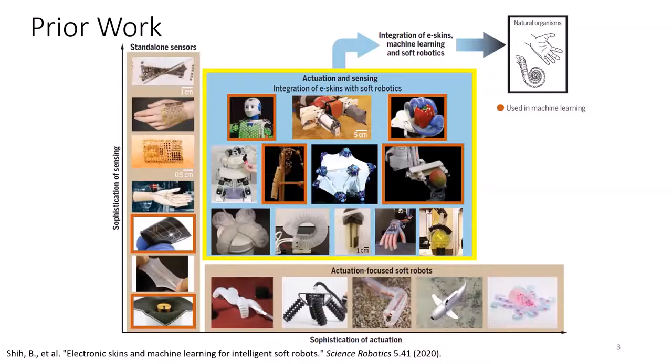The next challenge is developing systems that integrate both soft sensors and actuators together. Some common strategies for integration are adhering soft sensing skins to the outer surface of the robot or embedding sensors directly into the robot body. Sensing skin and soft actuator integration can most frequently be seen in soft grippers and hands. However, it remains an open challenge to build a system that uses soft actuation and sensing together for high-level tasks.